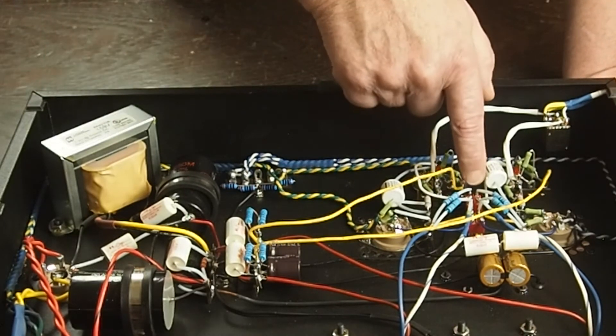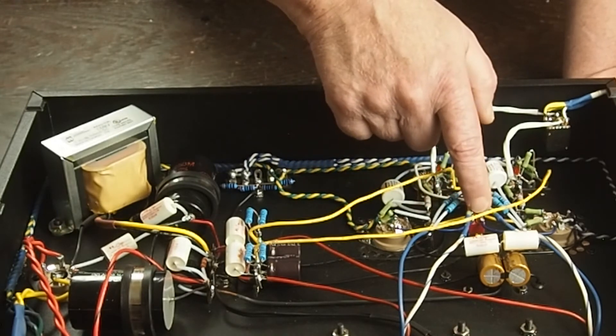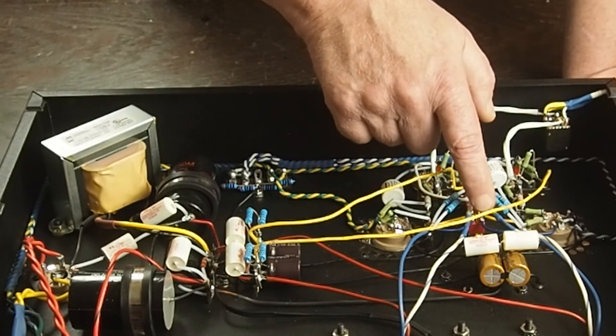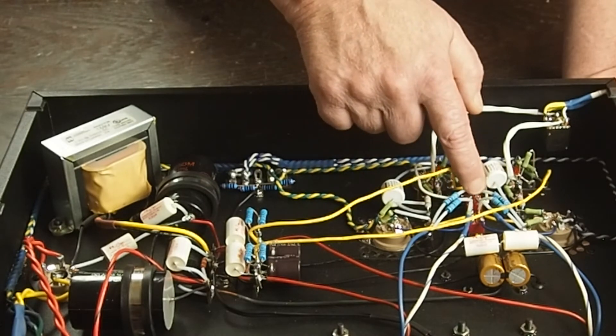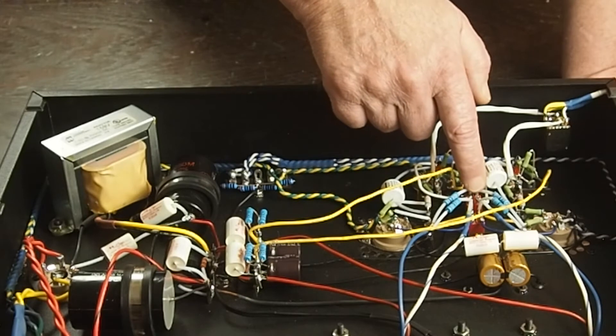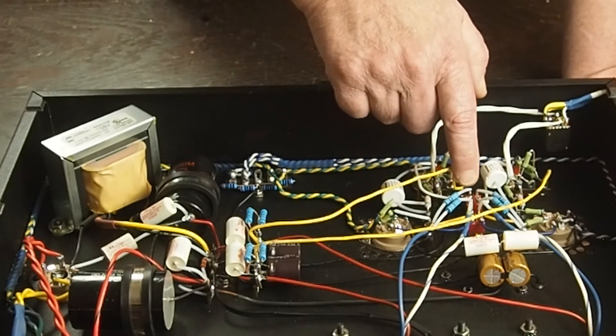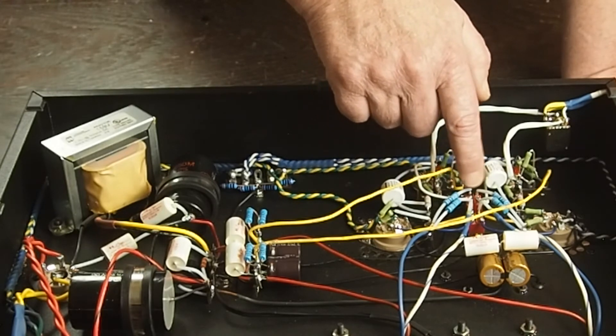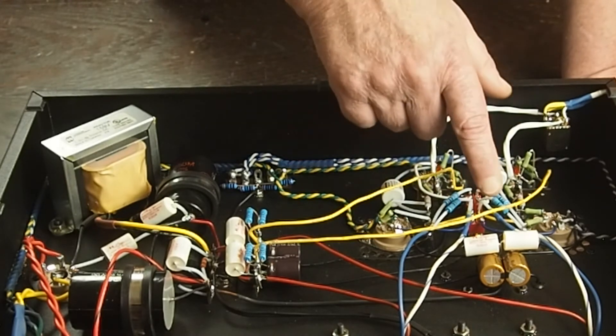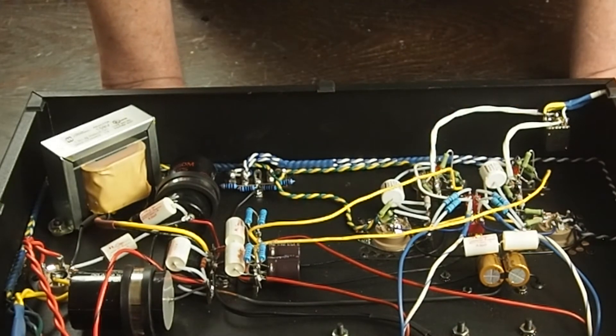These two switches here. The one on this end is the ultralinear triode switch. This is a switch that allows two different values of the shade feedback, or you can set it in the middle for none. I'll talk about this later when I go into the tweaks that I did to the amplifier.